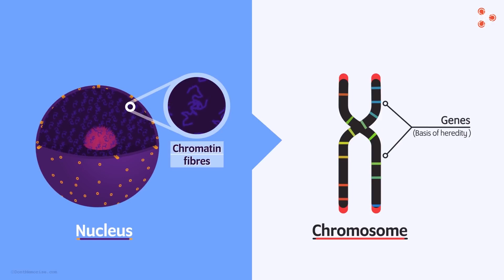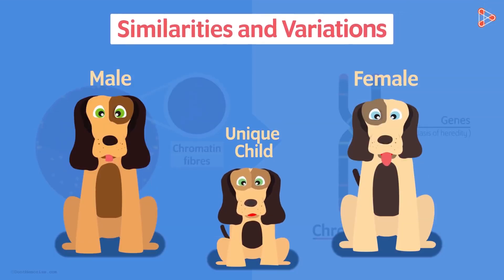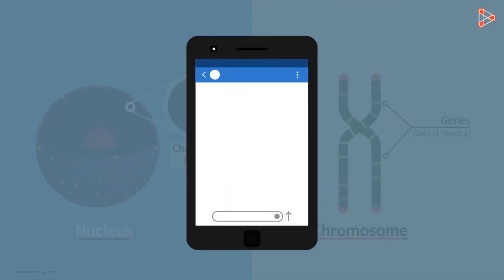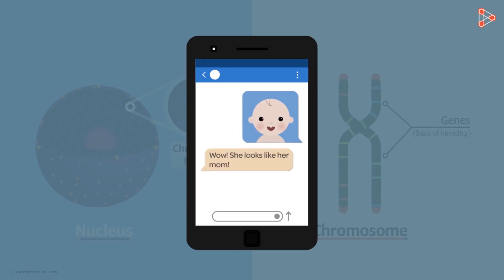Genes form the basis of heredity in all organisms — that means the similarities and variations the organisms have with their parents. For example, what do friends and family say when they see a baby? She looks exactly like her mother, or she's so much like her father. That's because the newborn baby gets her genes from her parents.